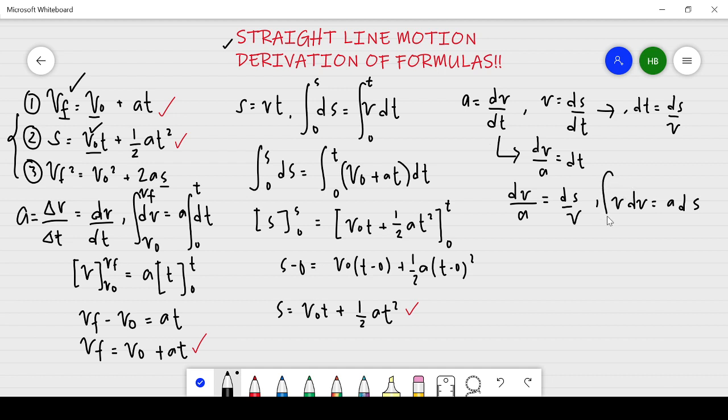Putting integral sign, acceleration is outside because it's constant. Upper limit for velocity is from v₀ to vf, and for ds is from 0 to s. Integral of v is v squared over 2, from v₀ to vf, is equal to a, integral of ds is s from 0 to s. And there you have it.